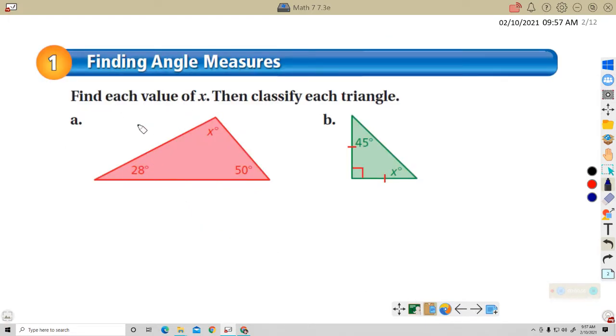Example 1, finding angle measures. There's two of these, A and B. Find each value of x, then classify each triangle. For A, I know that if I add 28 plus 50 plus x, those are the three angles of the triangle. If I add them up, I get 180. So now I just need to solve for x.